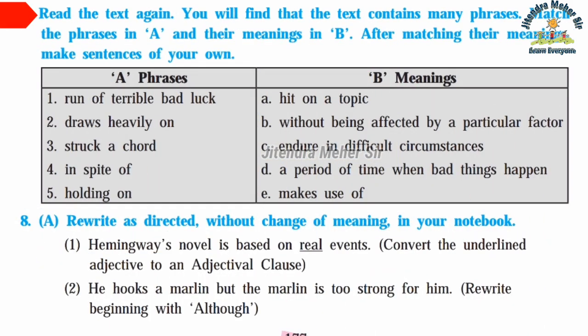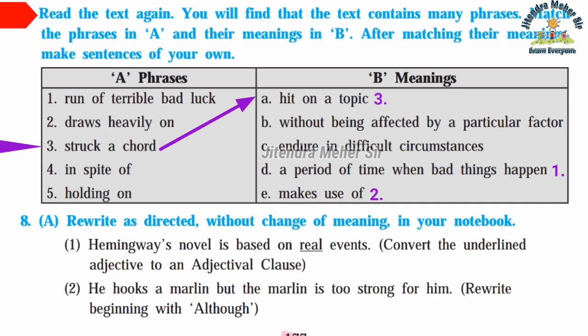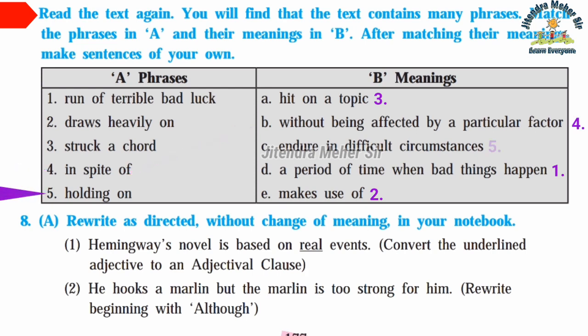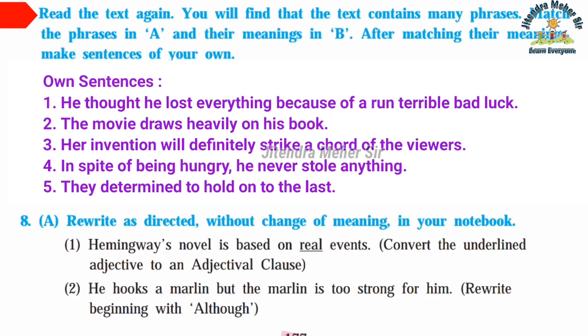Seventh: Read the text again — it contains many phrases. Match the phrases in column A with their meanings in column B, then make your own sentences. First: 'run of a terrible bad luck' — D: a period of time when bad things happen. Second: 'draws heavily on' — E: makes use of. Third: 'struck a chord' — A: hit on a topic. Fourth: 'in spite of' — B: without being affected by a particular factor. Fifth: 'holding on' — C: enduring difficult circumstances.